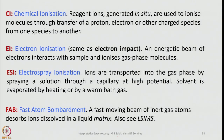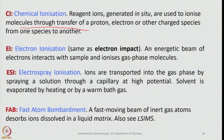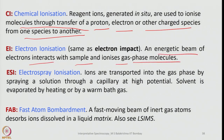Let us be familiar with some terms. CI — chemical ionization: reagent ions generated in situ when fast-moving electrons bombard the sample are used to ionize molecules through transfer of a proton, electron, or other charged species from one species to another. EI — electron ionization, also called electron impact: an energetic beam of electrons interacts with the sample and ionizes gas-phase molecules. ESI — electrospray ionization: ions are transported into the gas phase by spraying a solution through a capillary at high potential, and the solvent is evaporated by heating or a warm bath gas.